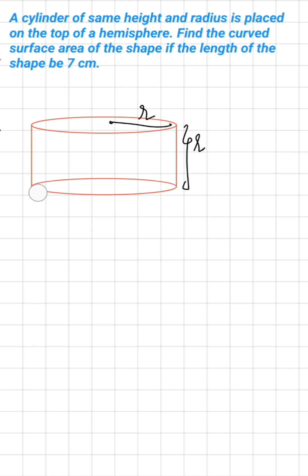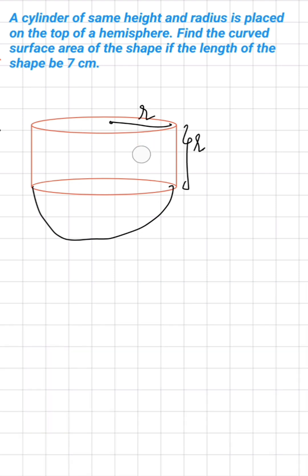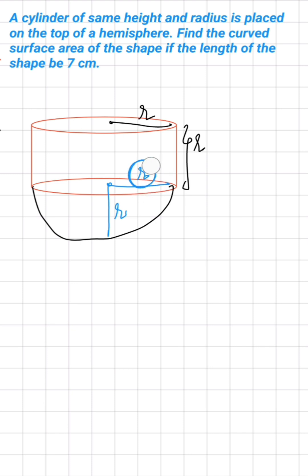The cylinder is placed on top of a hemisphere. The radius of the hemisphere and the radius of the cylinder are the same — they are not different. I hope you are getting it with the help of this diagram.